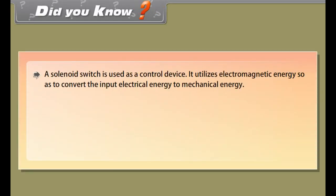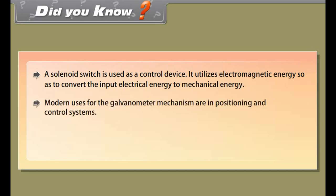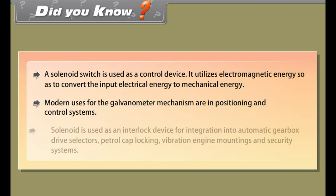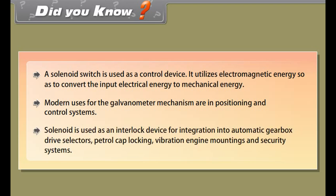Did you know? A solenoid switch is used as a control device, utilizing electromagnetic energy to convert input electrical energy to mechanical energy. Modern uses for the galvanometer mechanism include positioning and control systems. Solenoids are also used as interlock devices for automatic gearbox drive selectors, petrol cap locking, vibration engine mountings, and security systems.